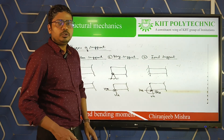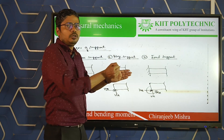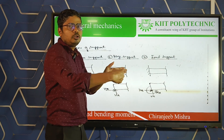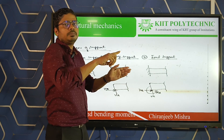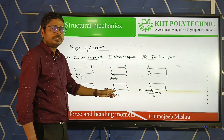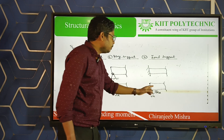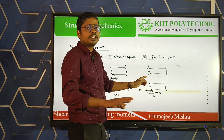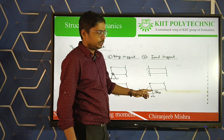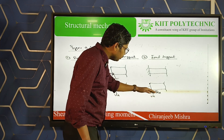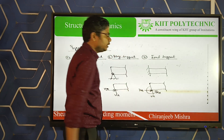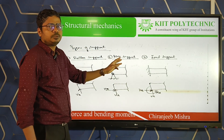There is no moment reaction in hinge support. Consider the door analogy — we can easily rotate the door, so there is no moment reaction. But for fixed support, all three reactions come: horizontal reaction, vertical reaction, and moment reaction. These are the three basic types of supports.